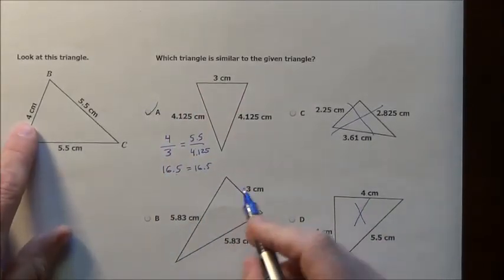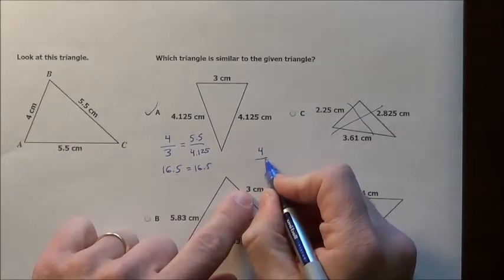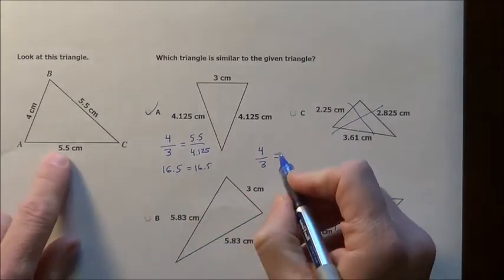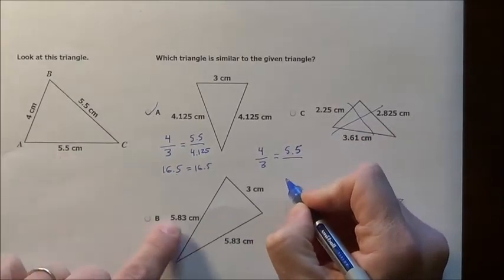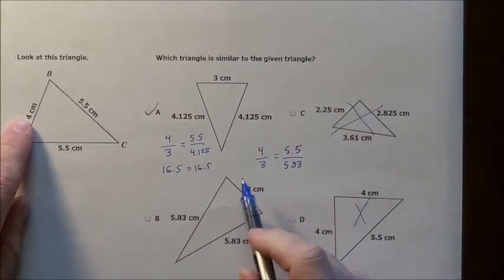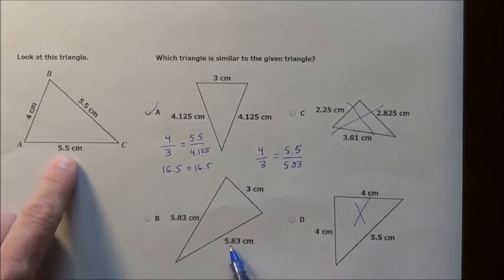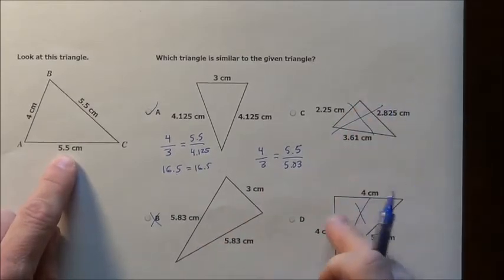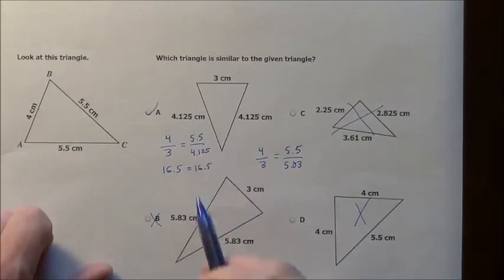If we try to do this one, we set up the proportion. We would say 4 is to the short side 3 as the 5.5 side is to the 5.83. Now again, we have the same problem. You know that is not going to work because 4 is to 3, so it shrunk. The 5.5 then expanded. So I should have marked off B to begin with. All C, D, and B, none of them would have worked anyway. It did not make any sense. So I knew it had to be A.